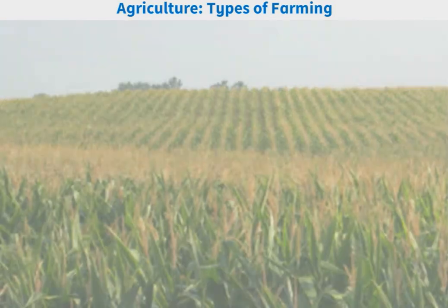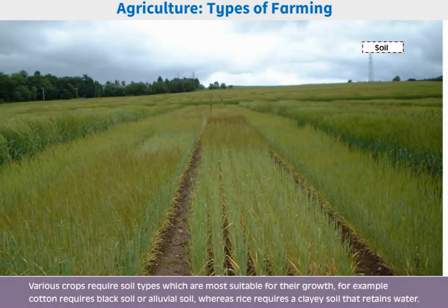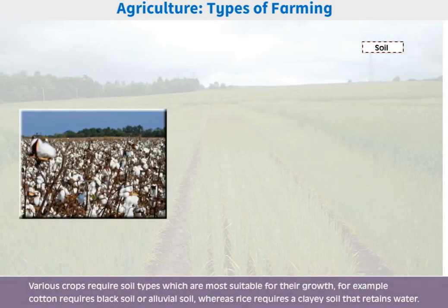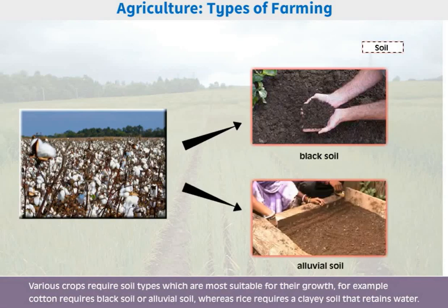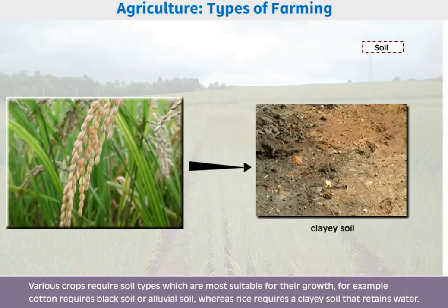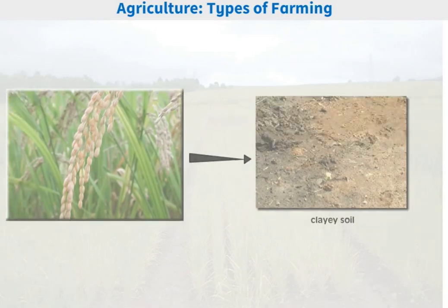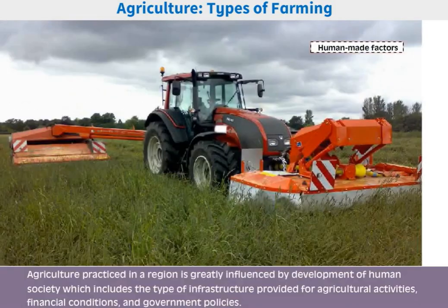Soil: various crops require soil types that are most suitable for their growth. For example, cotton requires black soil or alluvial soil, whereas rice requires a clay soil that retains water.